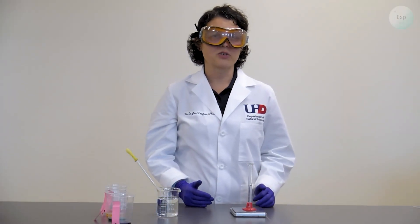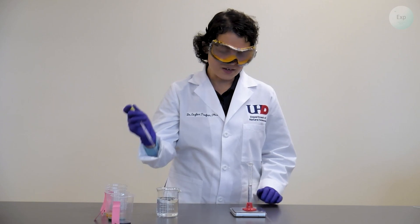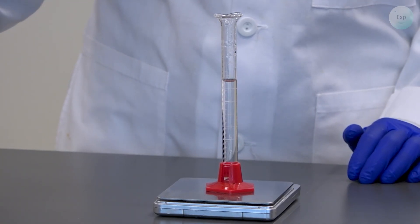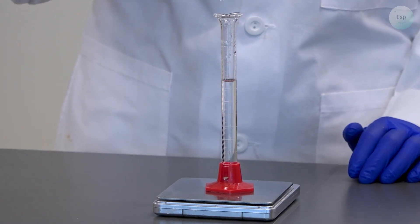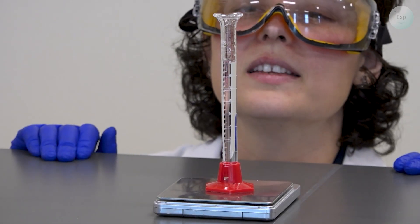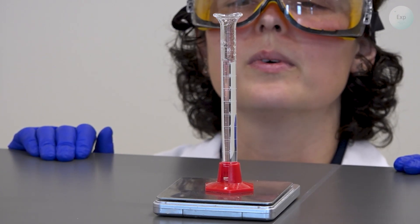And for the third measurement, we're going to add more water. And this time, we're going to aim anywhere between 9 and 10 milliliters because our graduated cylinder does not allow us to read a volume beyond 10. The mass now is 9.15 grams and the volume is 9.12 milliliters.